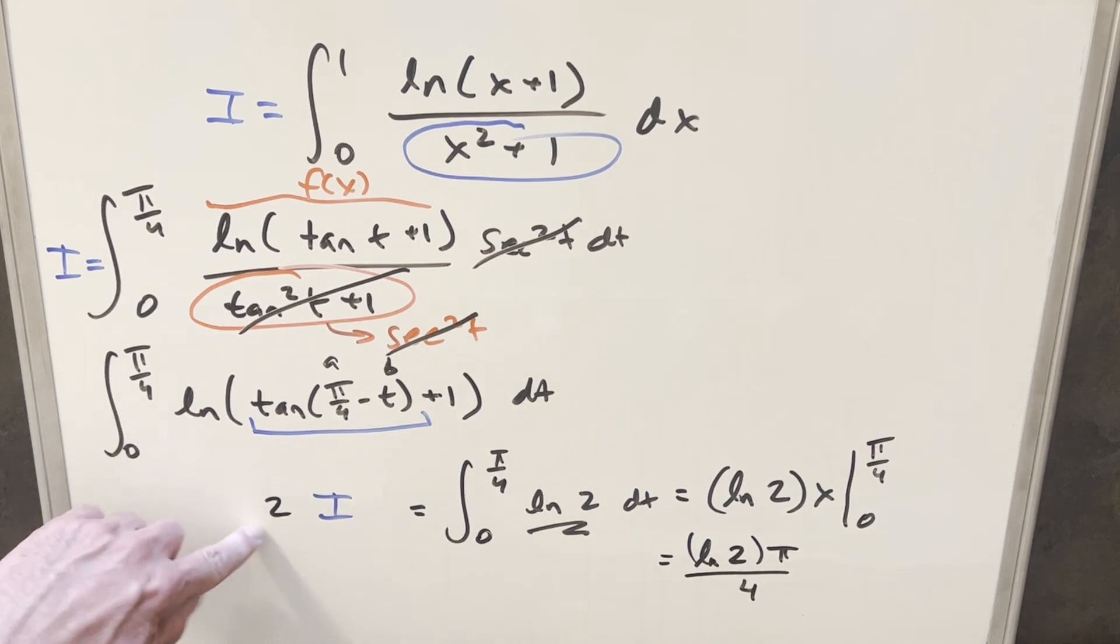But we're not quite done as this is two copies. So let's just divide off this two on both sides. Putting it all together, my final solution for this is just going to be natural log of two pi over eight.